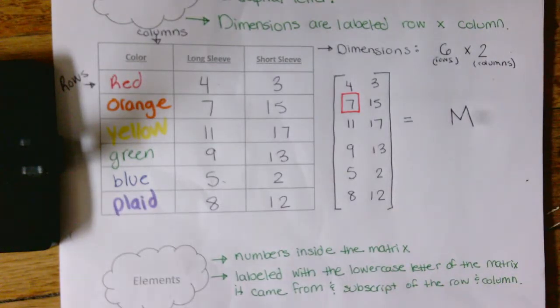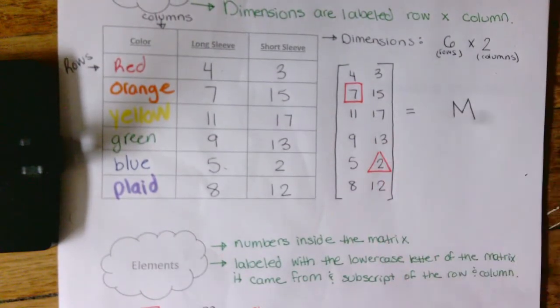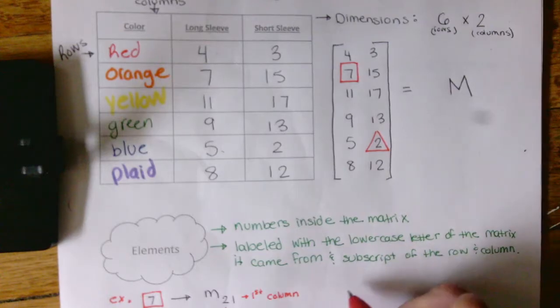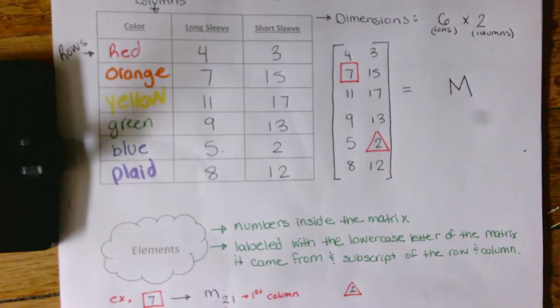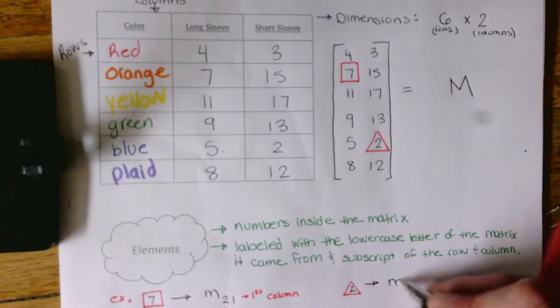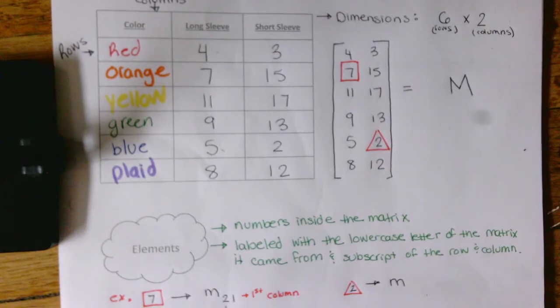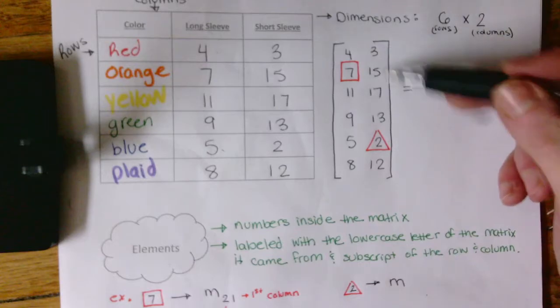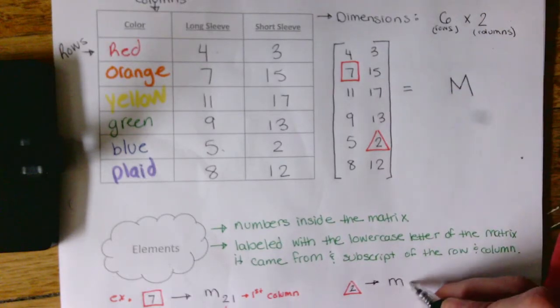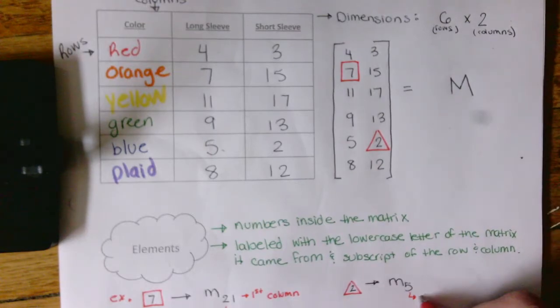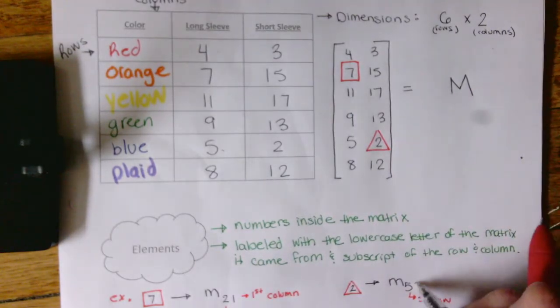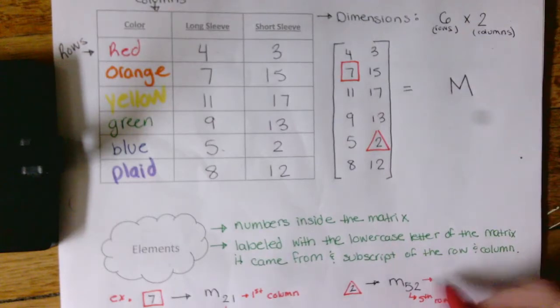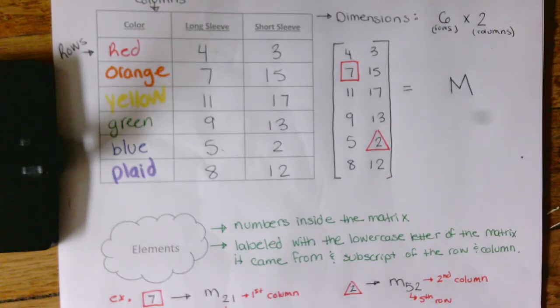If I was to pick another one, let's pick this one right here. So if I was to talk about this element right here, I would say okay, this came from matrix M. I'm going to use the lowercase m. It came from one, two, three, four, fifth row. And it came from one, two, second column. So that's how we label elements in matrices.